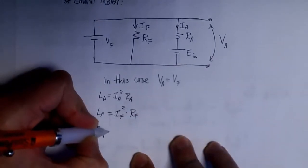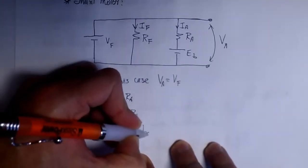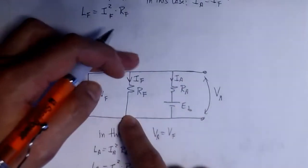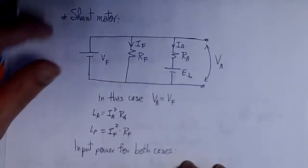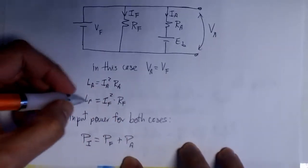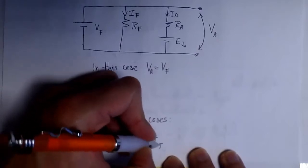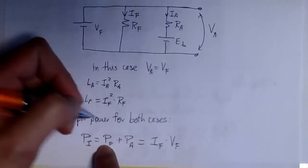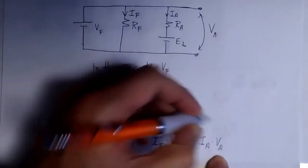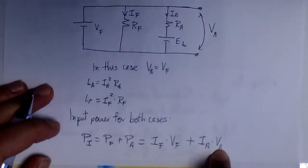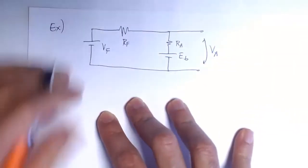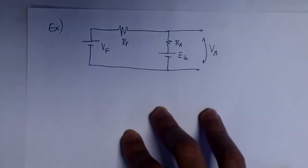We can compute the input power for both motor models. The input power is the power applied to the field windings plus the power applied to the armature windings — that is, IF × VF for the field windings plus IA × VA for the armature windings. This formula applies to both models. If we also know the mechanical losses and the input, we can find the efficiency. Let's see an example using the series motor.